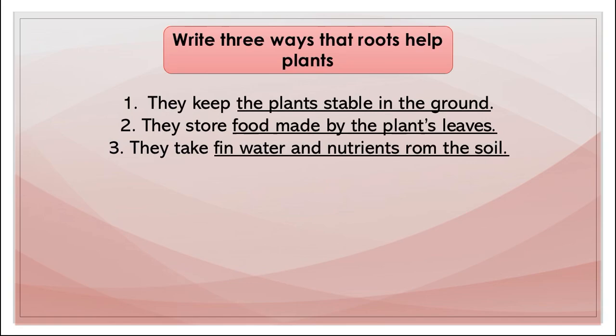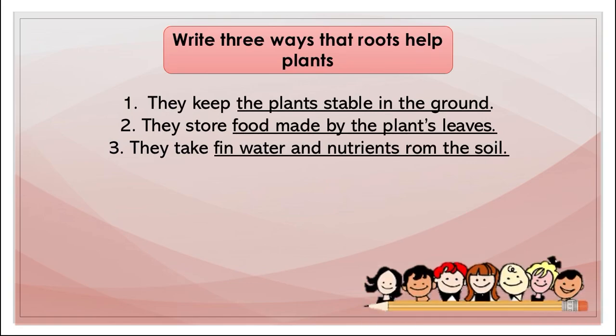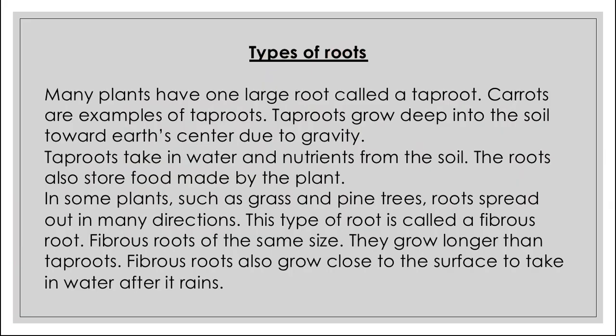Types of roots: Many plants have a large root called a taproot. Carrots are an example of taproots. Taproots grow deep into the soil toward the earth's center due to gravity. Taproots take in water and nutrients from the soil and also store food made by the plant. These taproots are strong and deeply anchored in the soil with long, big roots.